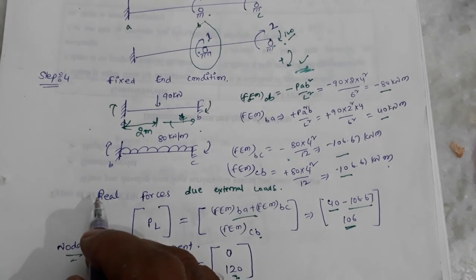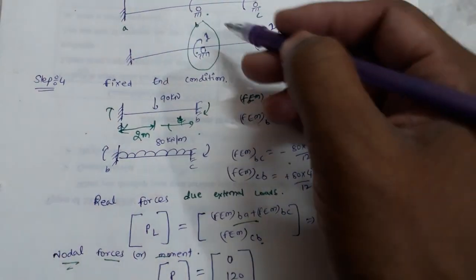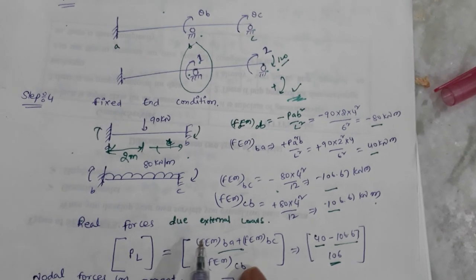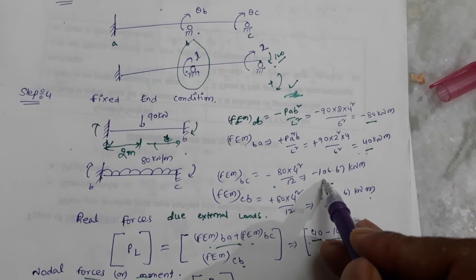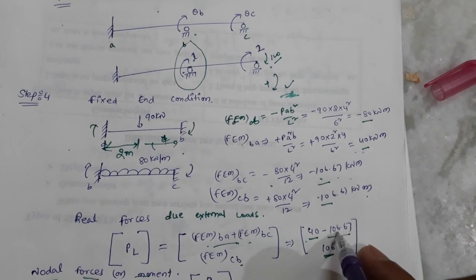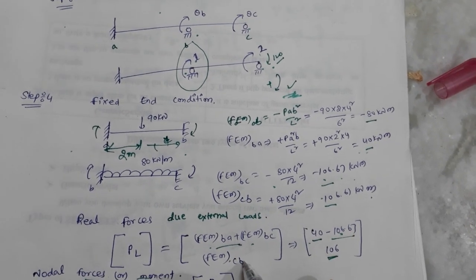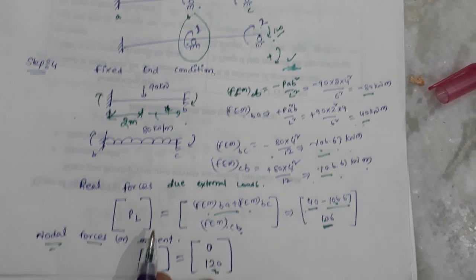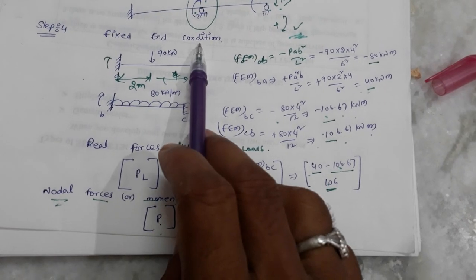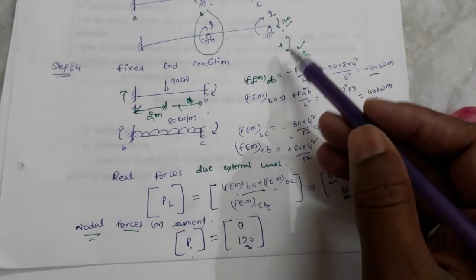Next, we find the real forces due to external loads. At position one, the fixed end moments of span B-C combine: 40 and minus 106.67, giving the resultant at position one. At position two, the fixed end moment of C-to-B is 106.67. The nodal moment at position one is zero, and at position two the nodal force is 120.